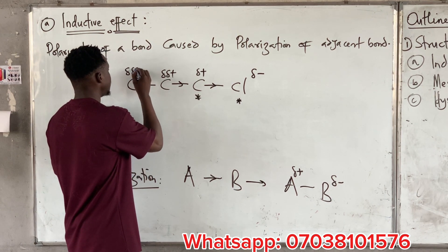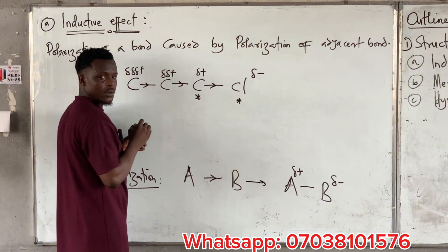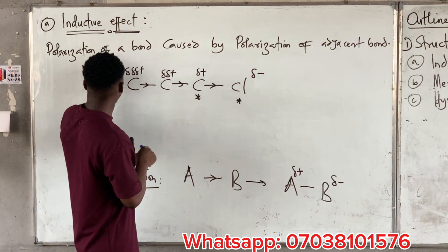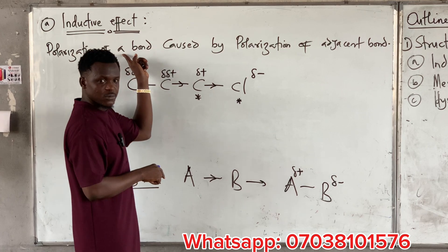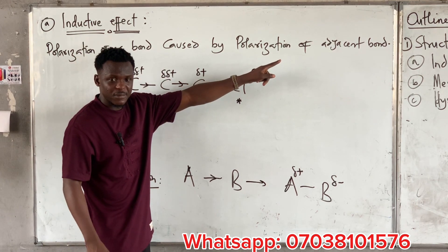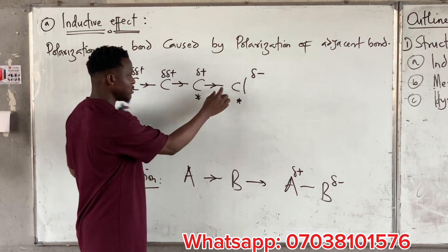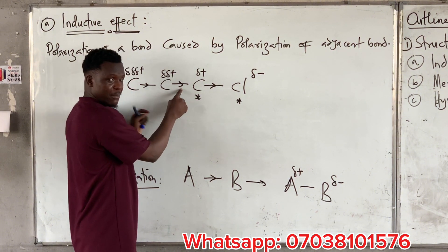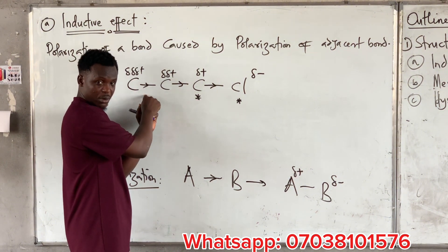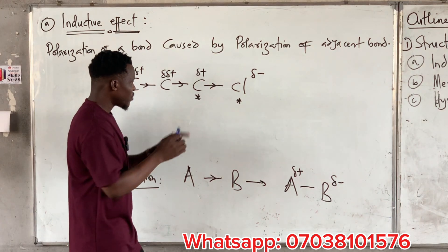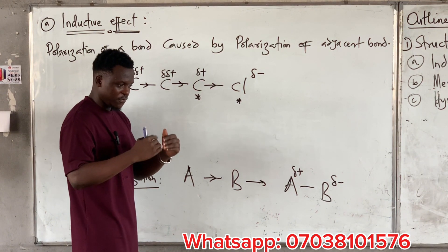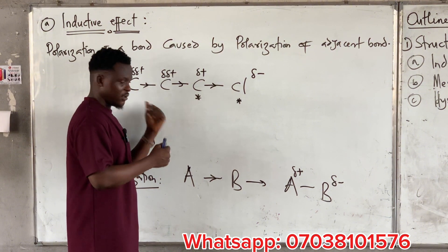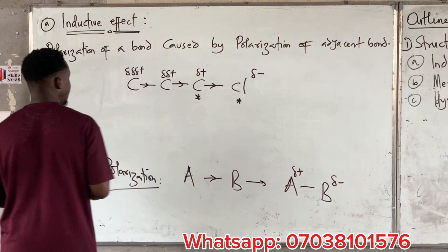That's why we said polarization of a bond is caused by polarization of an adjacent bond. Something must have happened first — the chlorine is the genesis of it all. It polarized this bond, which led to the next bond being polarized, and so on. But this effect dies off as it moves away from the source.